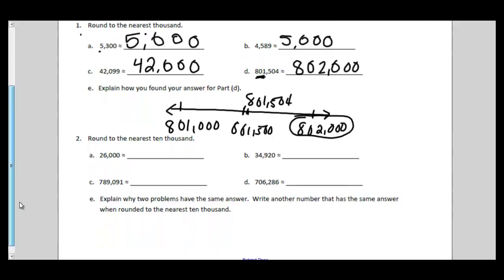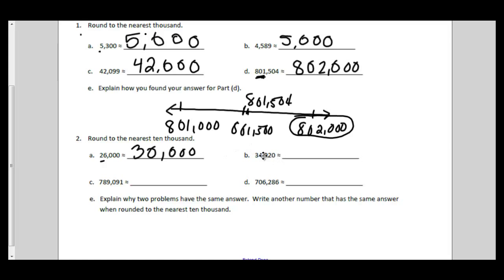Part two is exactly like part one except we're rounding to the nearest 10,000. Try to do these on your own and press play to check. To the nearest 10,000: 26,000 is between 20,000 and 30,000, with the halfway point at 25,000. Since it's more than 25,000, it rounds to 30,000. The next number is between 30,000 and 40,000 with 35,000 as the midway point — less than 35,000 — so it rounds to 30,000. The next is between 780,000 and 790,000, already quite close to 790,000, so it rounds to 790,000.